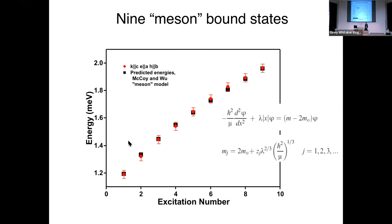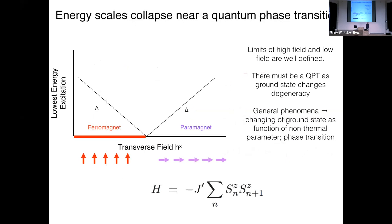One of the things we're interested in is not the zero-field spectrum but using the system as a model for a quantum phase transition. Quantum phase transitions are characterized by a collapse of energy scales. The 1D Ising chain ground state is a ferromagnet — all spins up or all spins down. A large transverse field spin-polarizes it. At zero field the ground state is twofold degenerate, but at large transverse field it's singly degenerate — it can't go from two to one smoothly, so there must be a quantum phase transition.